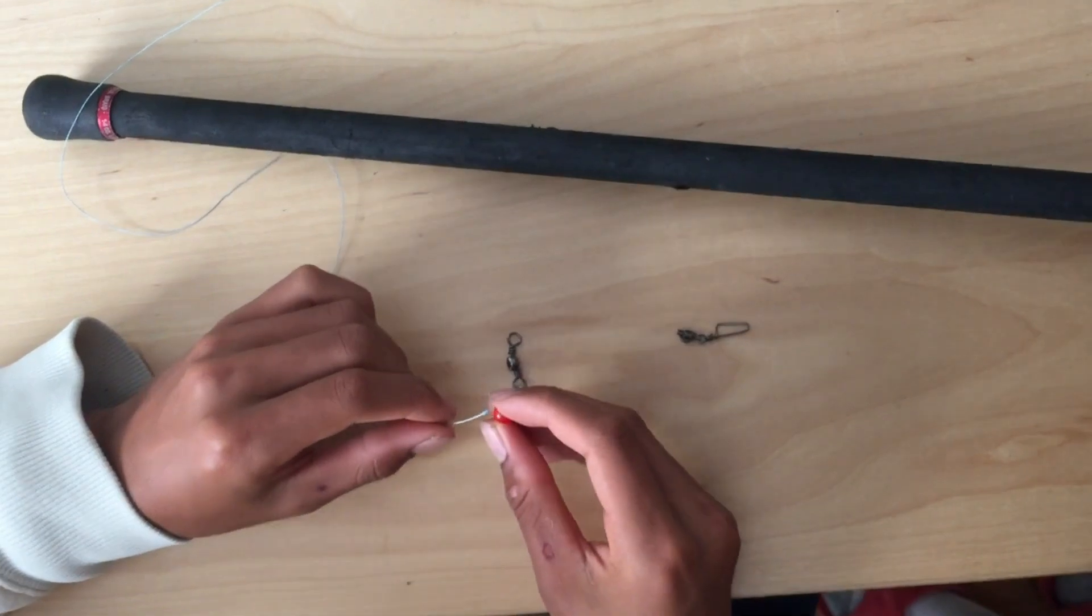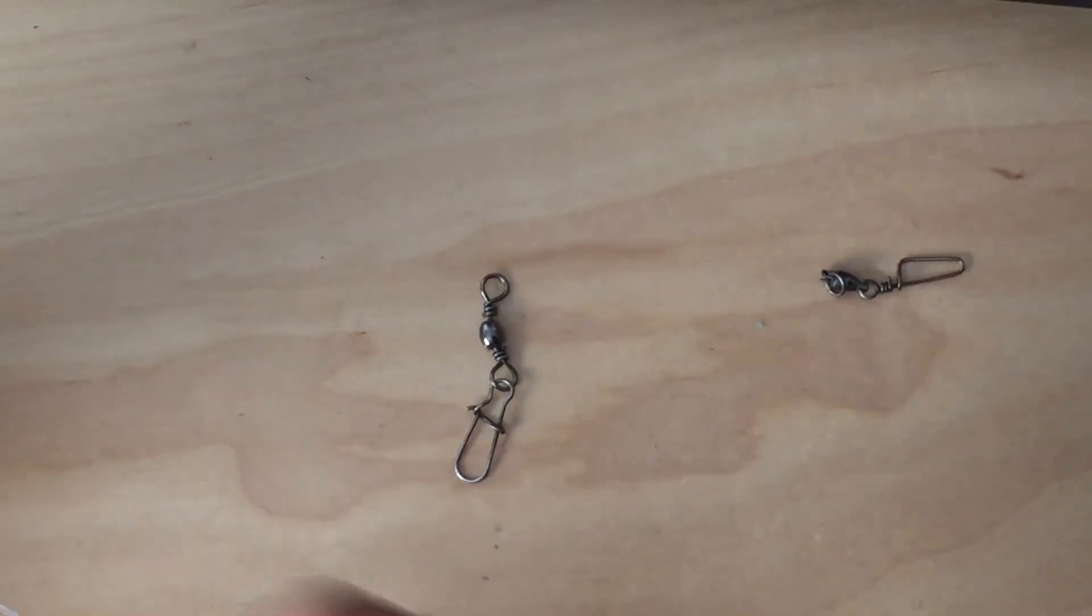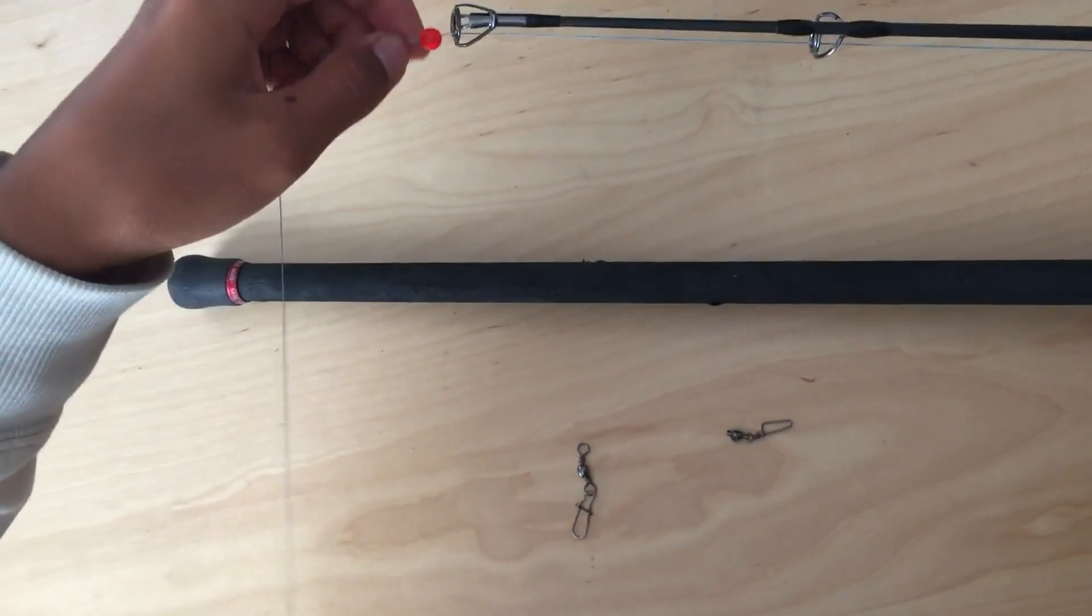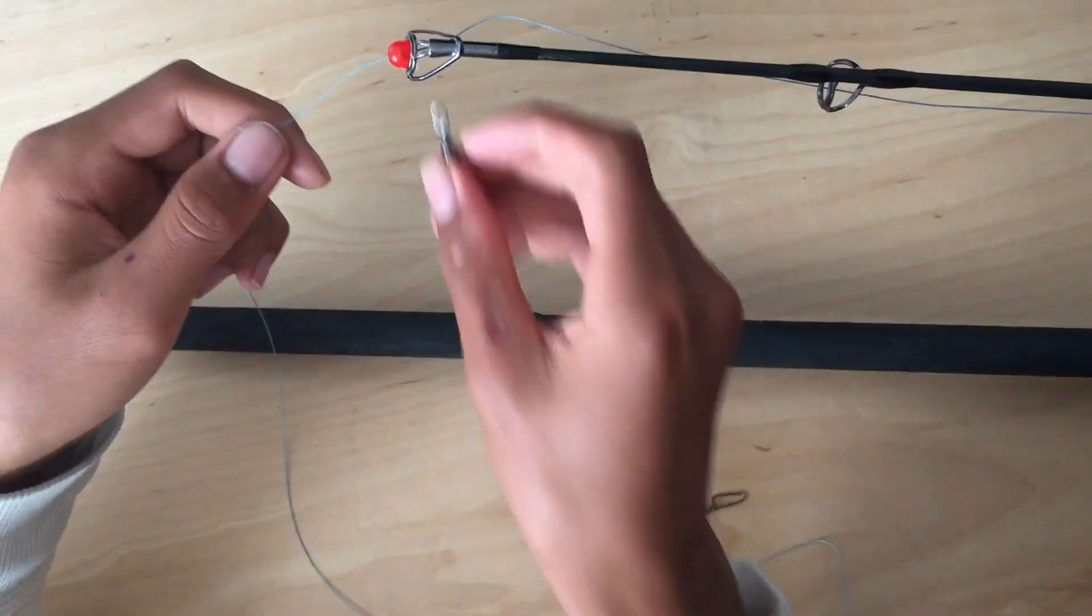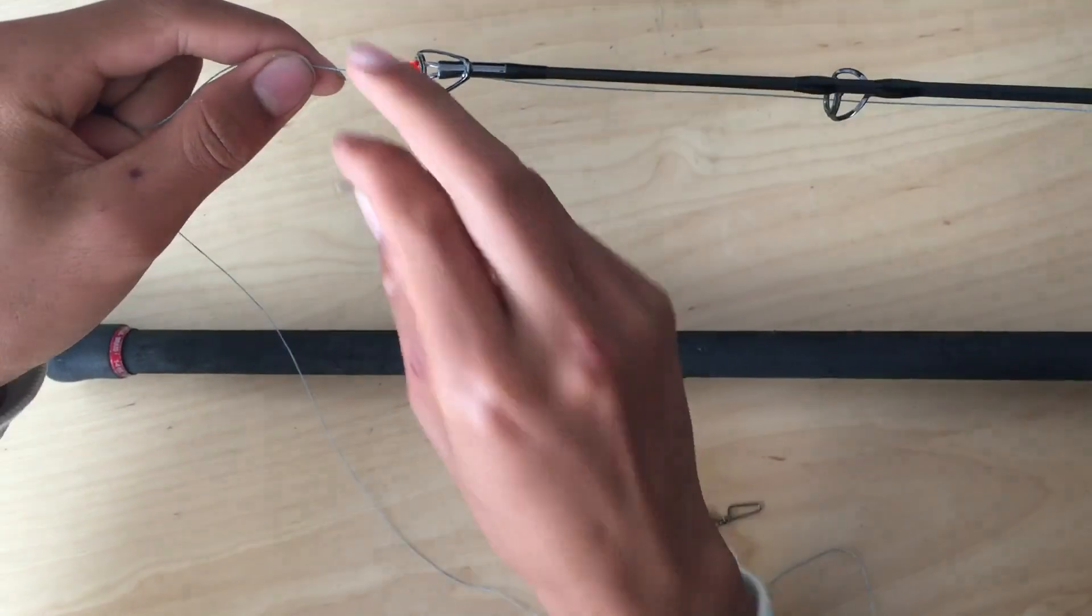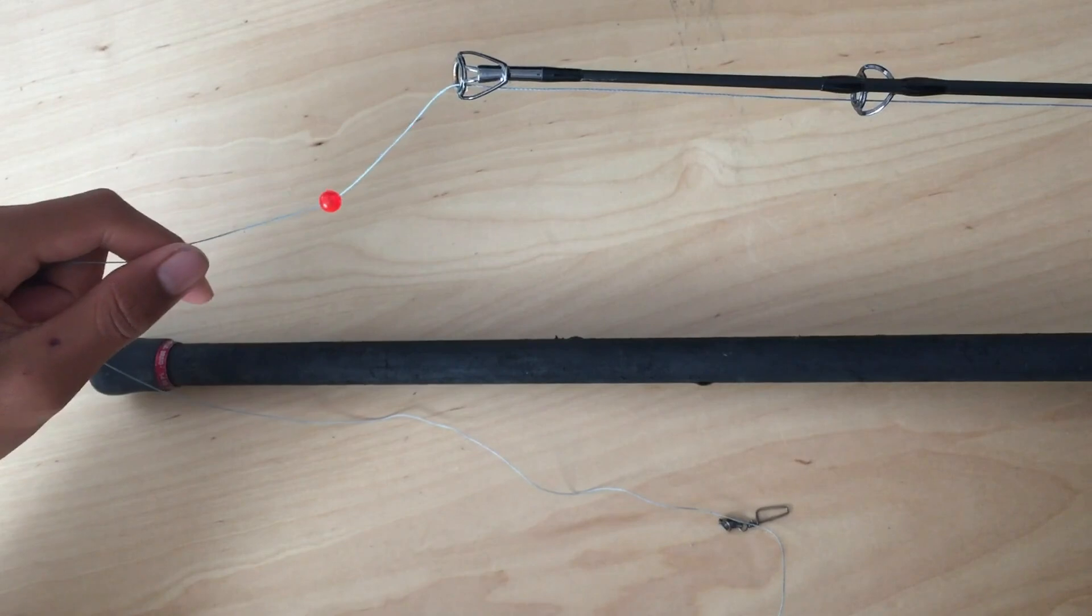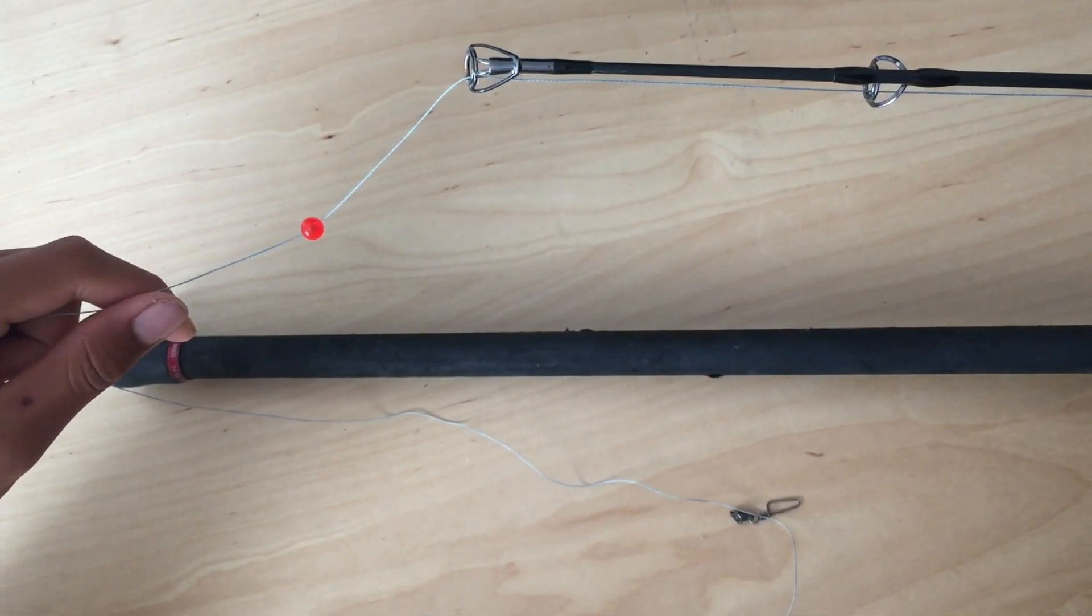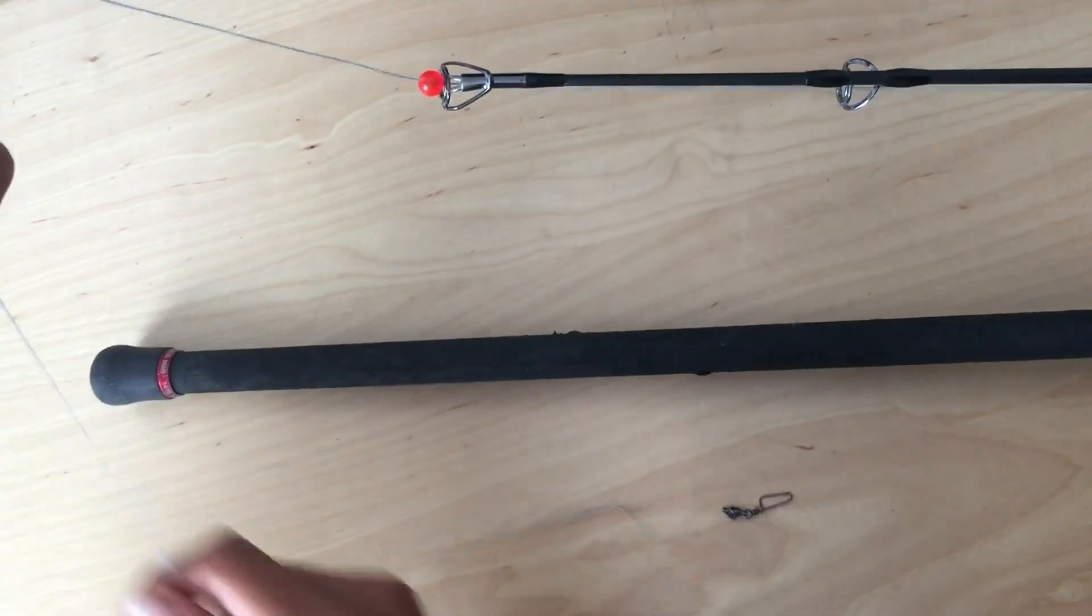put a bead. The bead is optional because this rod has really big guides so that the main swivel won't go through the first guide. So I put a bead there. If the main swivel can't go through the guide, this bead doesn't matter really.